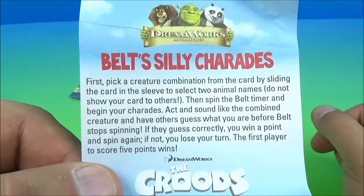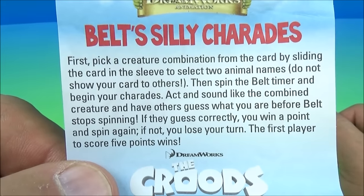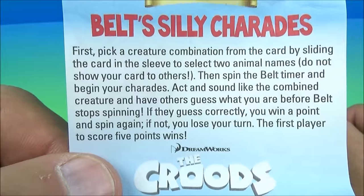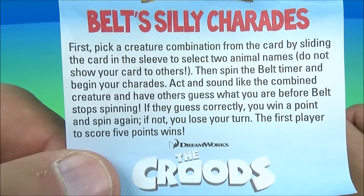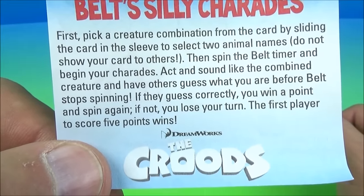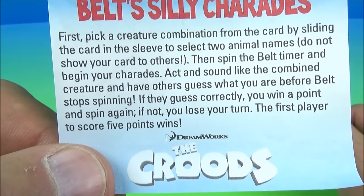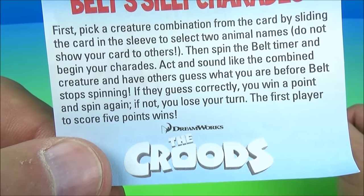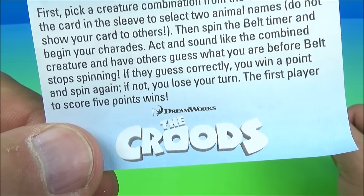Next up in the set we have Belt's Silly Charades. Here are the instructions: First pick a creature combination from the card by sliding the card in the sleeve to select two animal names. Do not show your card to the others. Then spin the Belt timer and begin your charades. Act and sound like the combined creature and have others guess what you are before Belt stops spinning.